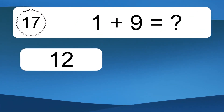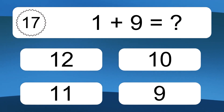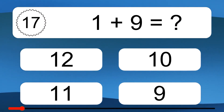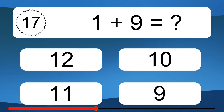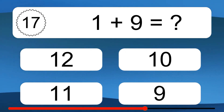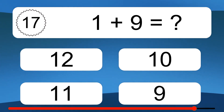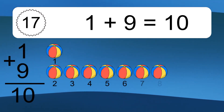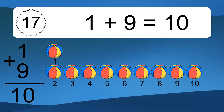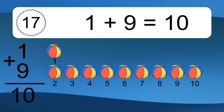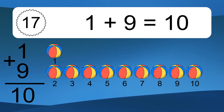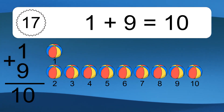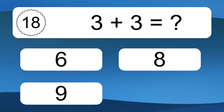1 plus 9 equals what? 1 plus 9 equals 10. Let's count it: 1, 2, 3, 4, 5, 6, 7, 8, 9, 10.